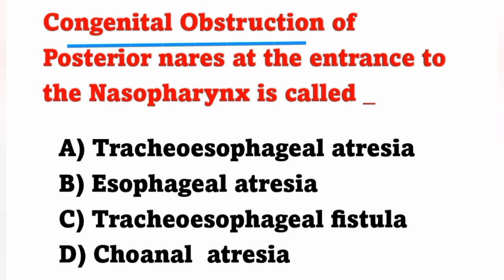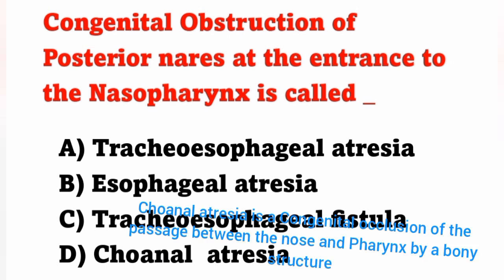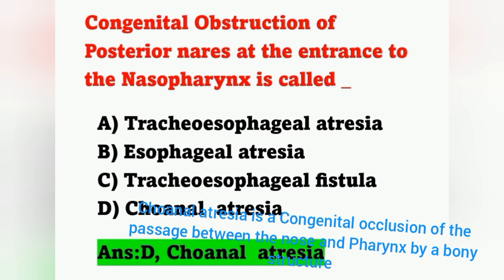Next question: congenital obstruction of posterior nares at the entrance to the nasopharynx is called — option A tracheoesophageal atresia, option B esophageal atresia, option C tracheoesophageal fistula, option D choanal atresia. Congenital means by birth there is an obstruction in the posterior part of the nares at the entrance of the nasopharynx. Choanal atresia is a congenital occlusion of the passage between nose and pharynx by bony structure or membranous obstruction. Option D is correct.